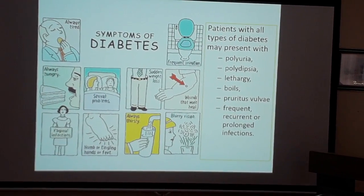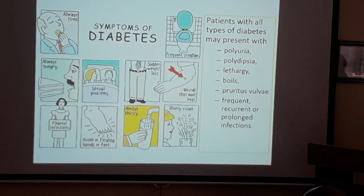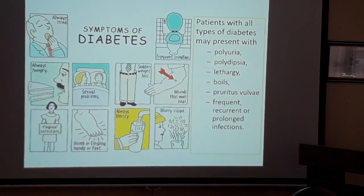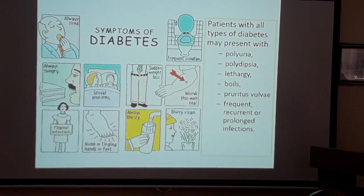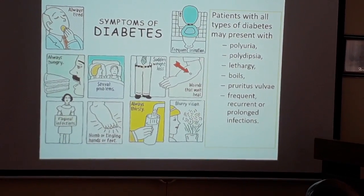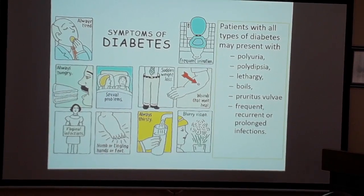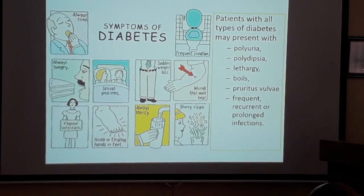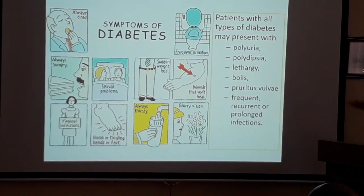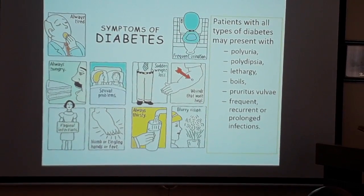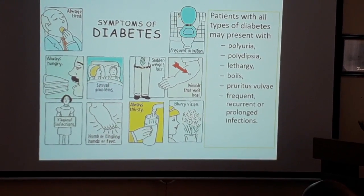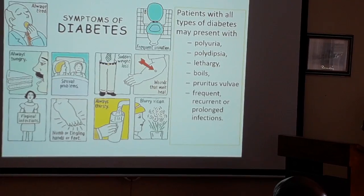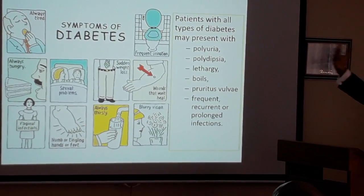Key symptoms of diabetes include feeling tired and lethargic, and being always hungry — we call this polyphagia, from 'poly' meaning many and 'phagia' meaning eating. There can also be sexual problems related to blood vessel damage, and weight loss, because insulin is not driving glucose into cells where it produces energy.